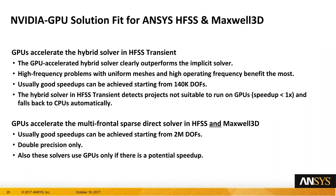Here are a few tips on what models benefit from GPU acceleration in HFSS and Maxwell. GPUs accelerate the hybrid solver and HFSS transient solver. The multi-frontal sparse direct solver in HFSS and Maxwell 3D can be accelerated by GPUs when the matrix size is larger than 2 million. Other factors such as the matrix front size and sparse pattern also impact the speed-up. Notably, the HFSS transient code automatically detects if a problem can fit on the GPU, and if not, it will fall back to CPUs.